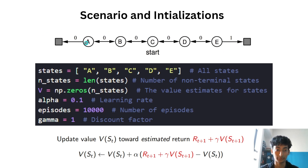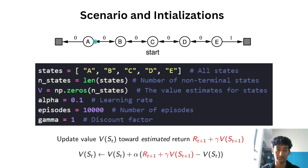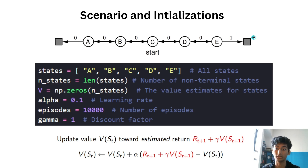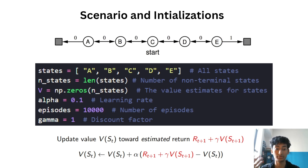The state space is A, B, C, D, E. All states represented in a circle are your non-terminal states, meaning you can take actions from them — either go left or right. These states will have value estimates initialized to zero before you start your episodes. The square states are terminal states: if you end up in these states, your reward is whatever is mentioned on those arrows, and the value estimate of terminal states is always zero because you cannot take any action from them.